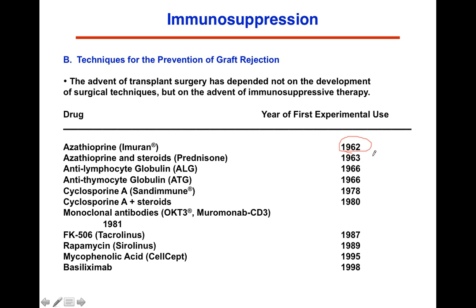After the war, studies began to look at whether some of these compounds could be used therapeutically. They're quite toxic, but cancer is a proliferating disease, so anything that would interfere with DNA — potentially DNA synthesis — was recognized as having potential.